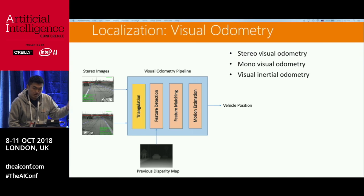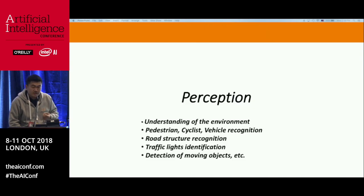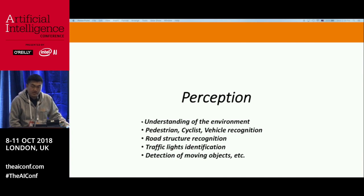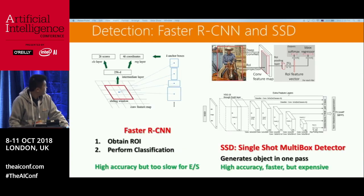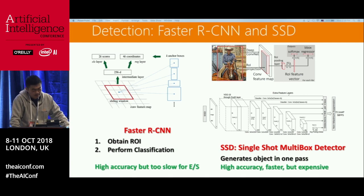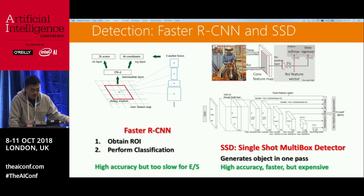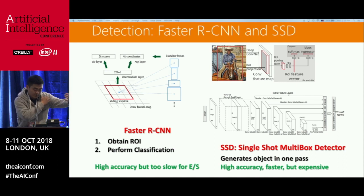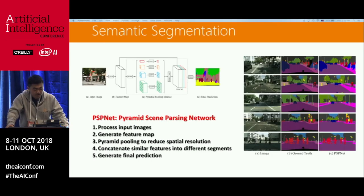Now you know how to localize your vehicle. The second part is about perception. Today when we talk about AI, almost everybody's talking about deep learning — same here. When we do perception, a lot of the networks we use are deep learning networks. How do you detect there's a person in front of you? There are several networks you can use: Fast RCNN, and SSD, which is more recent — both can help you detect persons on the street.